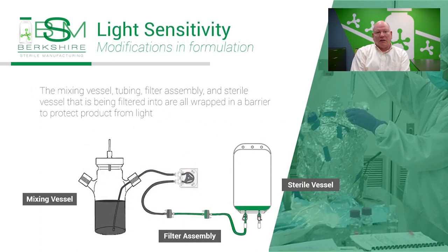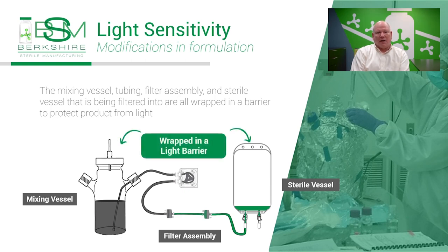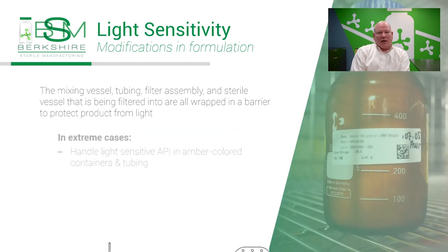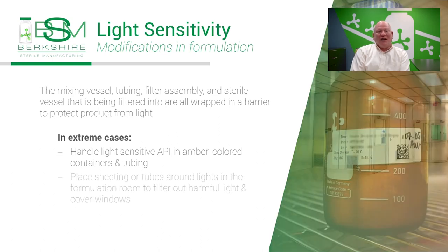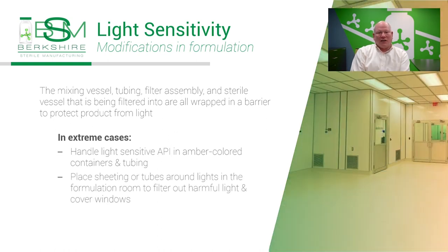In extreme cases, we can also handle light-sensitive API in amber-colored containers and tubing, or set up an appropriate environment to protect it. We can place sheeting or tubes around the lights and block out the windows to change the color of the light in the room — adjusting all the lights to be entirely amber and essentially removing blue light from the room. This is an extreme measure, but we have done this before.